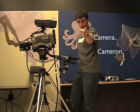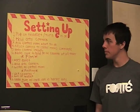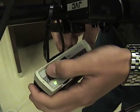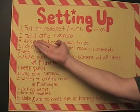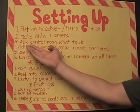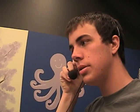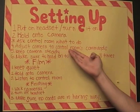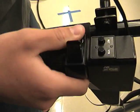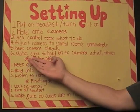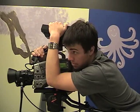Finally, we have Camera with Cameron. First, you'll want to put on the headset and turn it on. Turn the camera on and put on the headset. Next, you're going to want to hold on to the camera. Then you're going to want to ask the control room what to do: 'Camera 1 to control room, what am I doing?' Next, you'll want to adjust the camera to the control room's commands. You can use that button to zoom and the other button to focus your zoom. Make sure to hold on to the camera at all times.